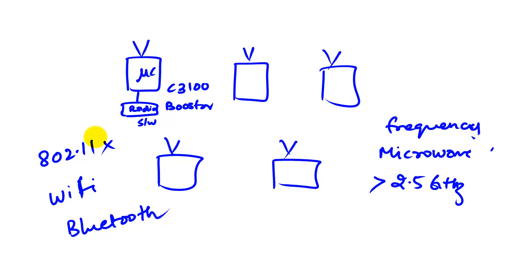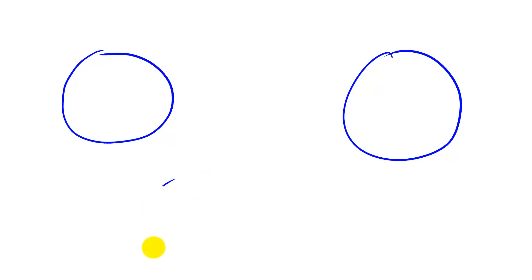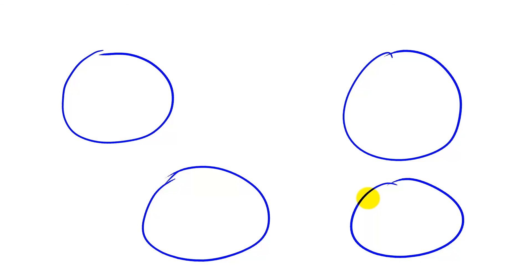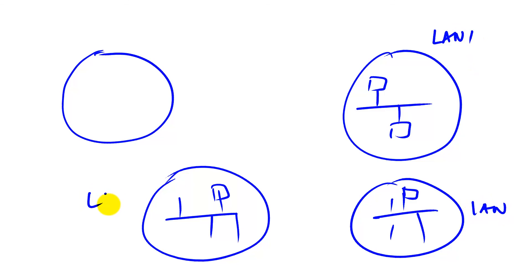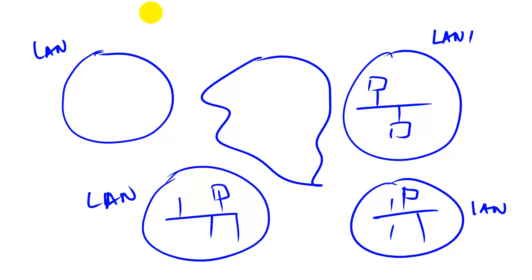But what if I want to go bigger? I have a network in my organization, there's another network somewhere else, and these networks are cropping up because everybody wants to communicate with their devices. We very soon want to make these independent networks — called local area networks — talk to each other. So we need some sort of infrastructure to do that.